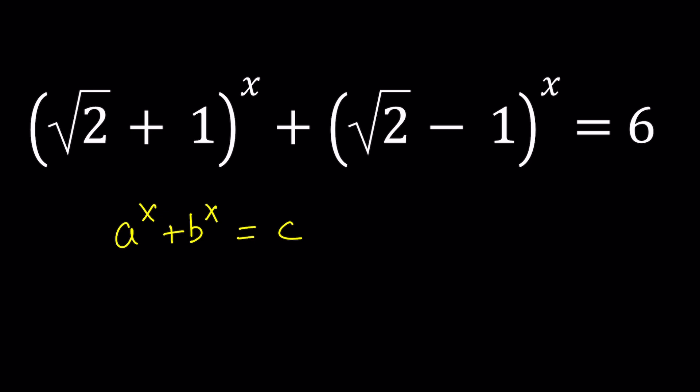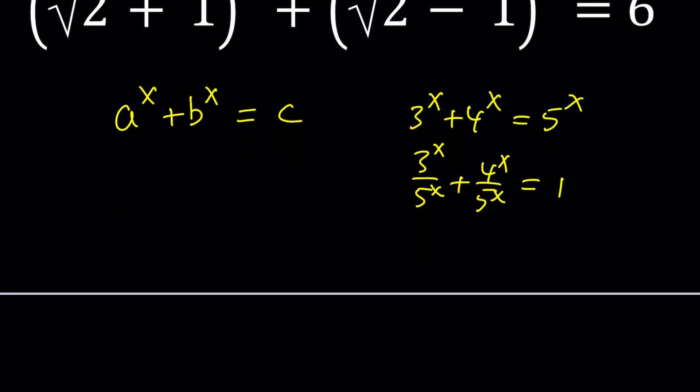So the first thing I want to do when we have an equation like this. For example, if we had 3 to the x plus 4 to the x equals 5 to the x then we would probably say, okay, Pythagorean theorem, x equals 2. And if you really wanted to show that there are no other solutions you can divide everything by 5 to the power of x and then you can kind of show that the left-hand side is the sum of two decreasing functions, therefore it's decreasing and the right-hand side is horizontal line so they can only intersect at a single point which means there's only one real solution.